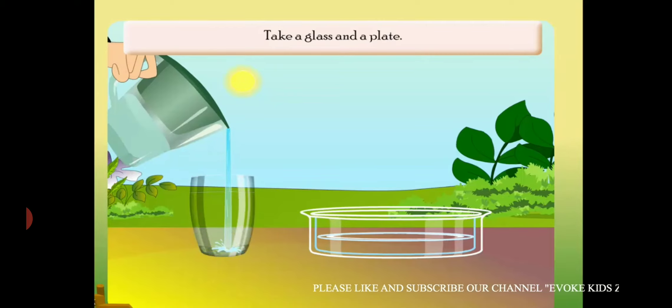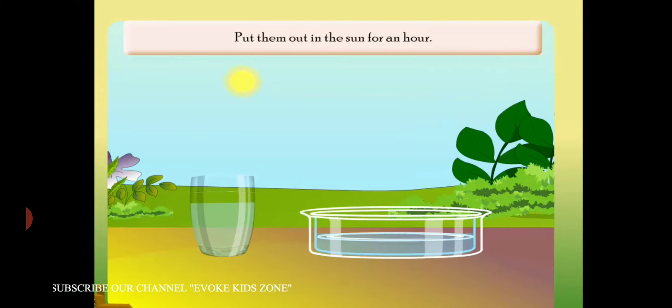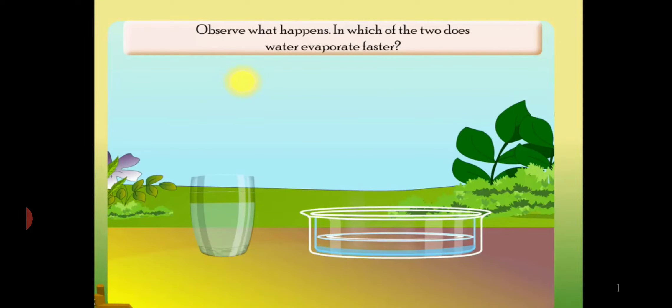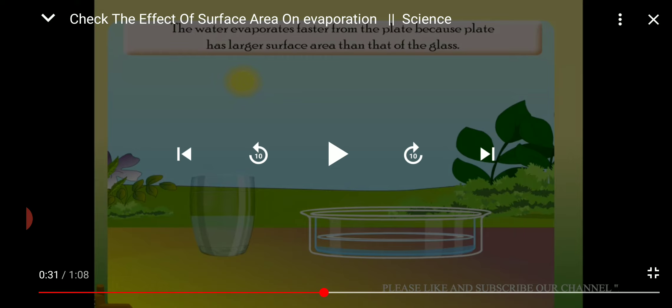Evaporation is a very important phenomenon and there are four factors which affect the rate — the speed — of evaporation. First, let us see how surface area affects the rate of evaporation. If we take the same amount of water in a glass and in a broad container, after some time the water from the container has evaporated but some remains in the glass. Water evaporates faster from the broader plate because it has a larger surface area. So, more the surface area, more will be the rate of evaporation.